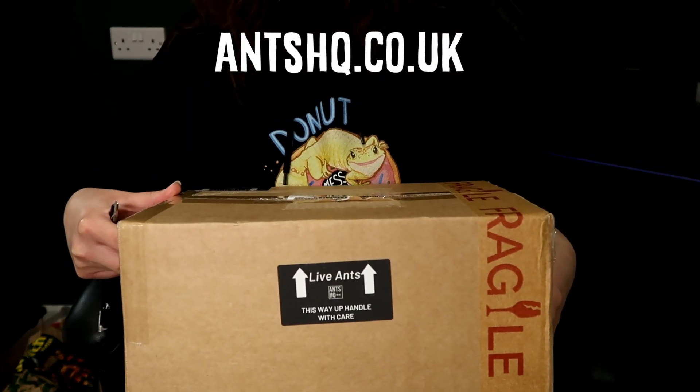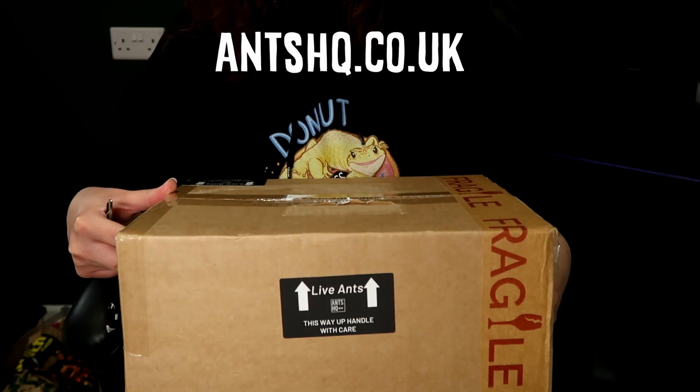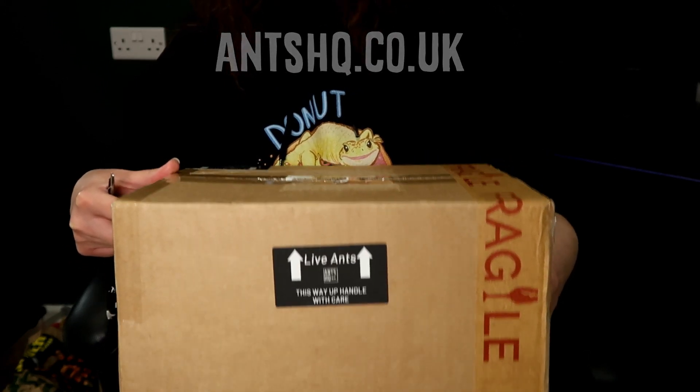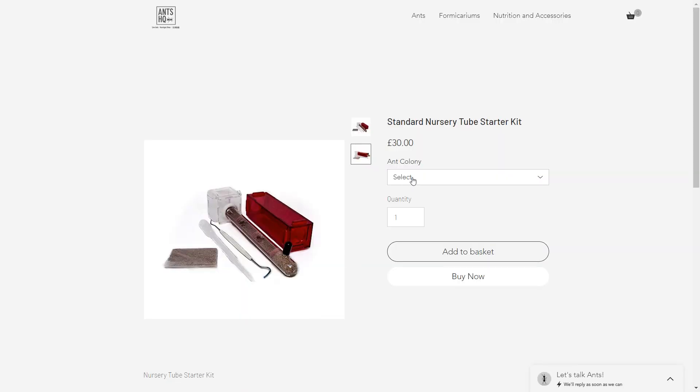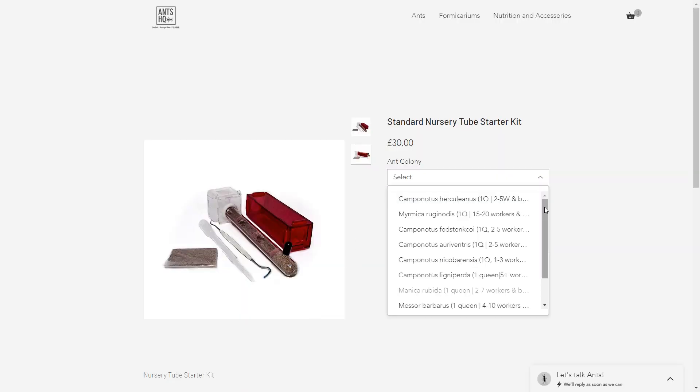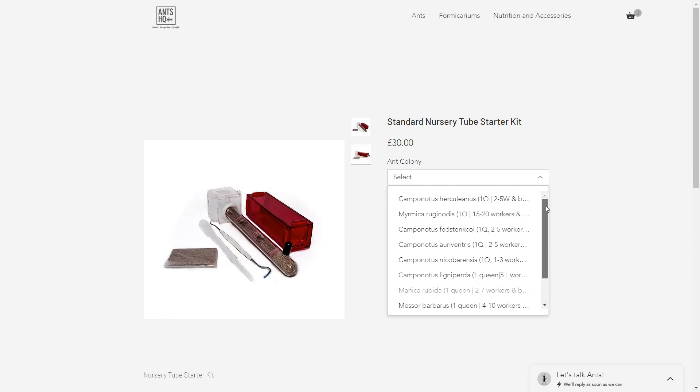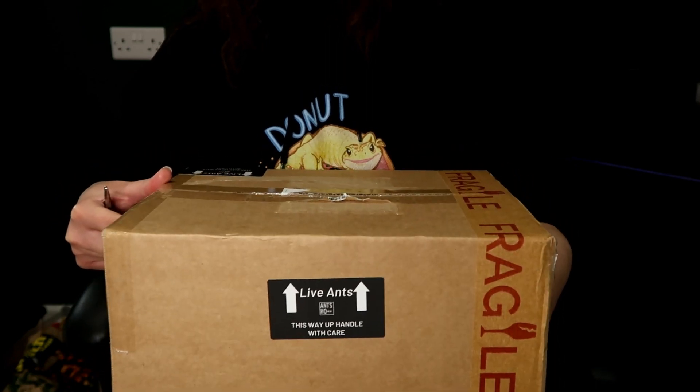So antshq.co.uk reached out to me and asked if I wanted to try out their standard nursery tube starter kit, and with this you can choose whichever colony you want. I went with one of my favorites, what I miss deeply, the Mesa Barbarus, I think I pronounced that right, the Harvester Ant.